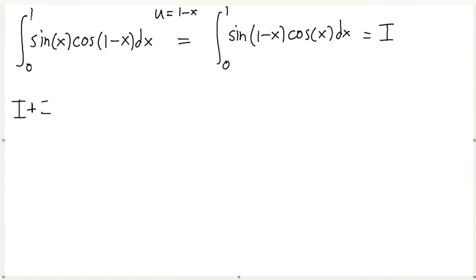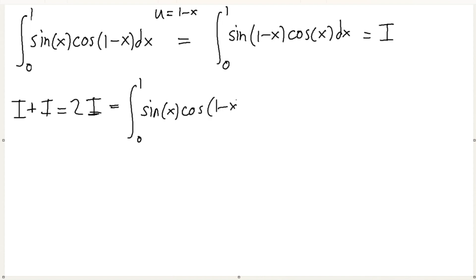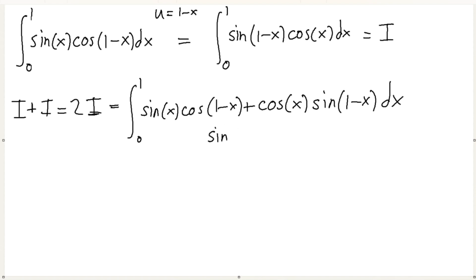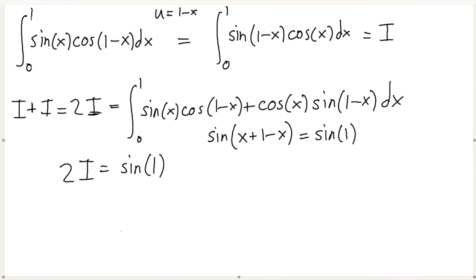So we do i plus i, which equals 2i. We're adding two different forms of i together: sine of x cosine of (1 minus x) plus cosine of x sine of (1 minus x). This is the angle addition identity for sine, so the whole thing equals sine of (x + 1 − x) = sine of 1. So our integral equals sine of 1, and our answer is sine of 1 over 2.